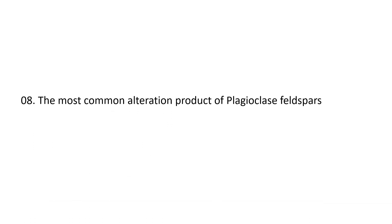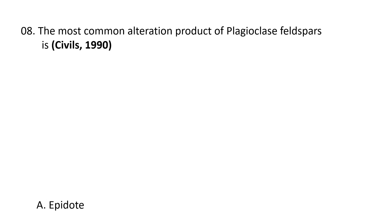Next question. The most common alteration product of plagioclase feldspar is: A. Epidote, B. Scapolite, C. Chlorite, D. Mica. Correct answer is B. Scapolite. So plagioclase generally alters to scapolite.